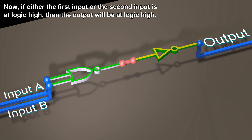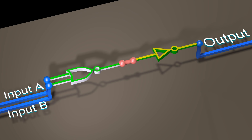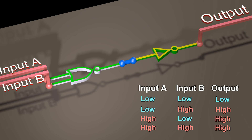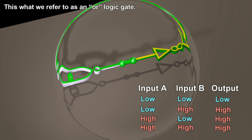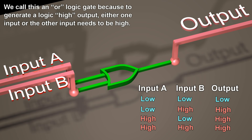Now if either the first input or the second input is at logic high, then the output will be at logic high. This is what we refer to as an OR logic gate, because to generate a logic high output, either the first input or the second input needs to be high.